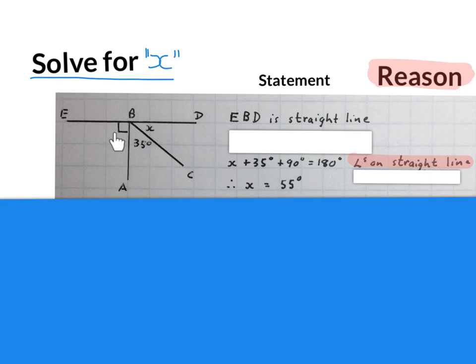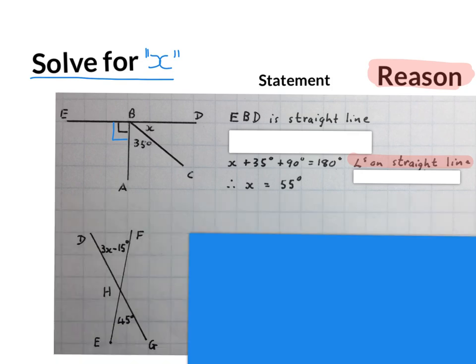It must make sense because there's a 90 there, a 35 there, plus 55 will give me 180. If they put a little block in the corner of two lines meeting, that means it is 90 degrees. An important point in geometry not stressed enough in grade 8 and 9: if they don't tell you something is a straight line, you can't assume it is. For this video, assume that the lines that look straight are straight — I'm not going to write it every time.